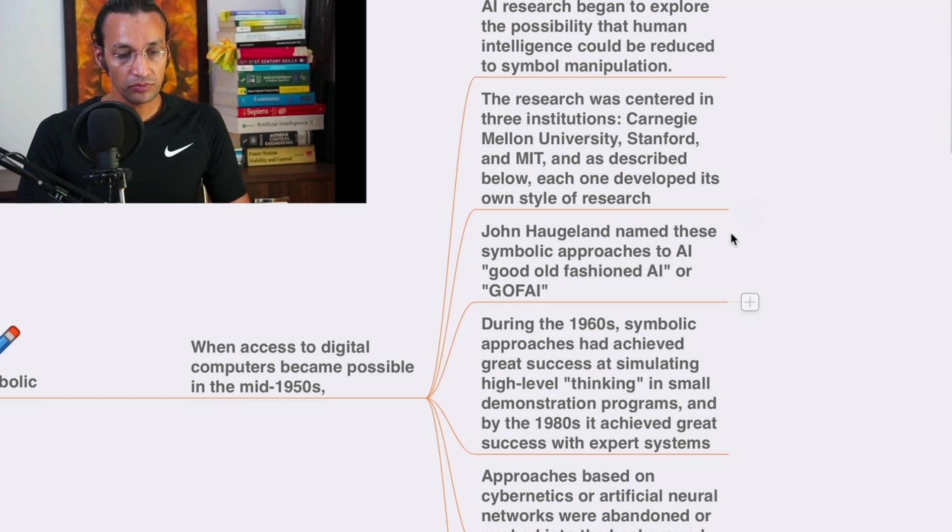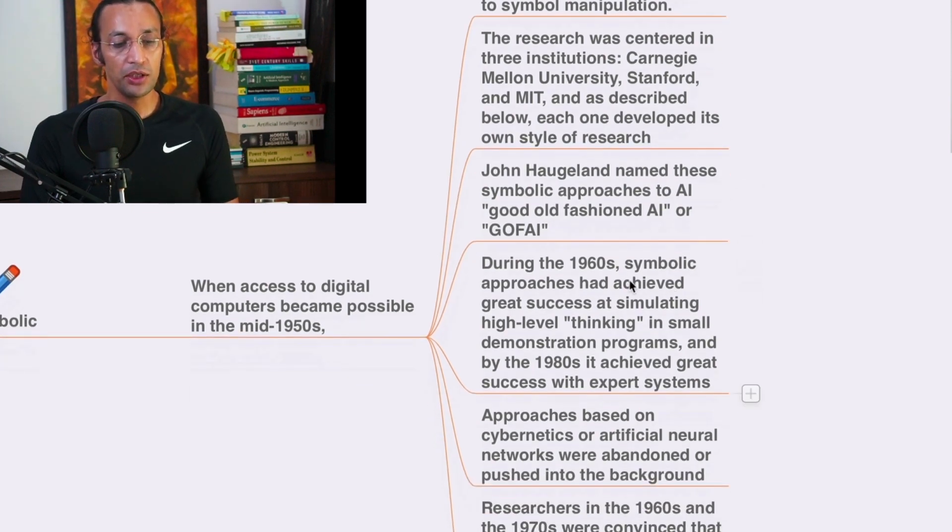So John Haugeland named these symbolic approaches to AI good old fashioned AI or you can call it GOFAI. During 1960s symbolic approaches had achieved great success at stimulating high level thinking in small demonstration programs and by the 1980s it achieved great success with expert systems.